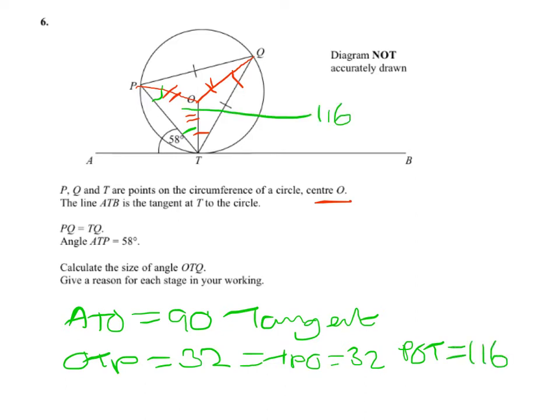Now our angle POQ, POQ is going to equal TOQ, and that's because TQ equals QP, they're identical. So we can find our angle there and there.